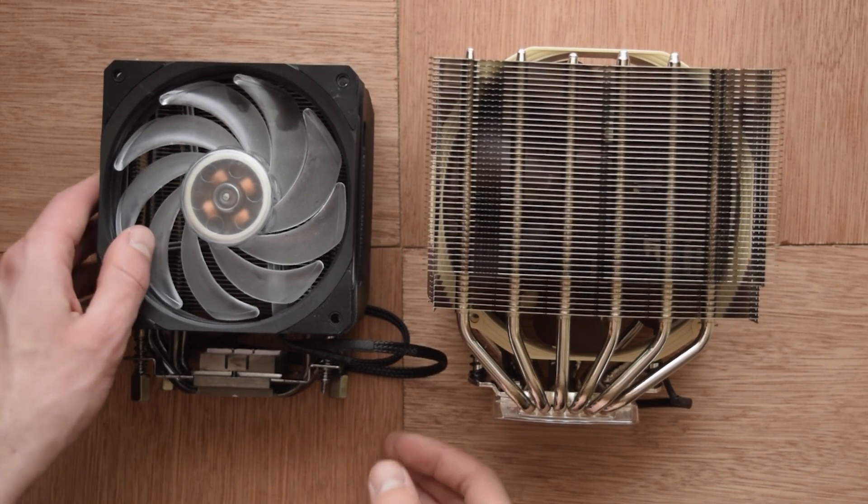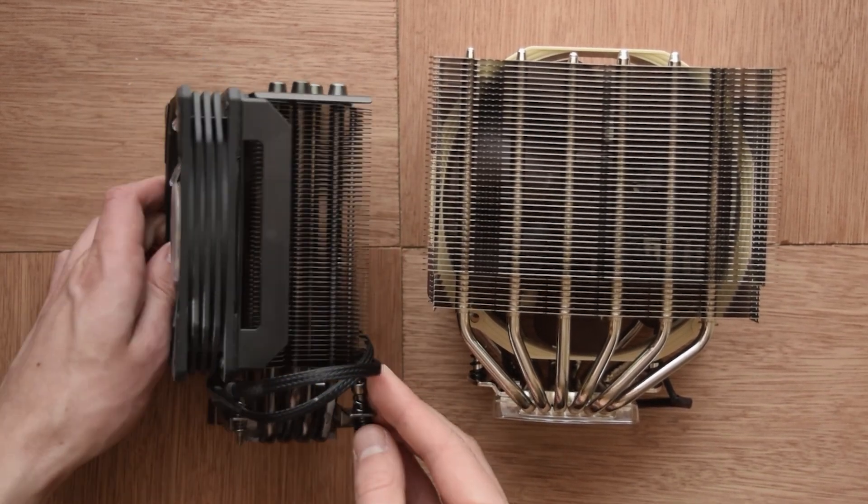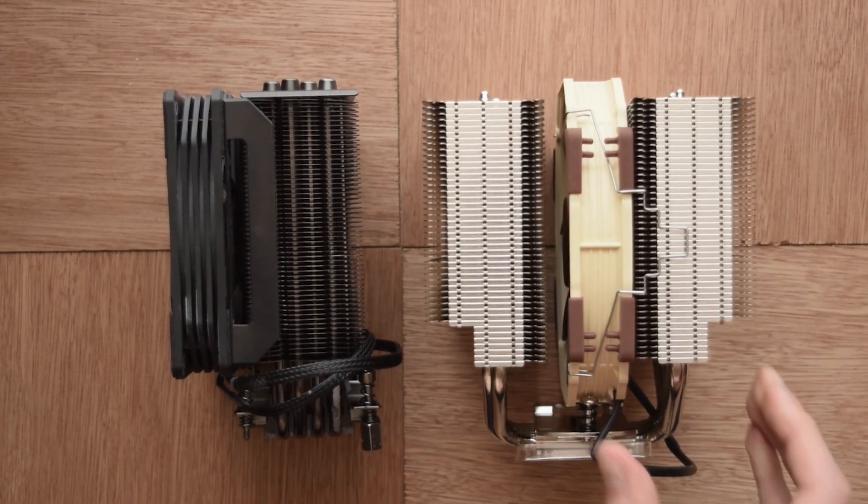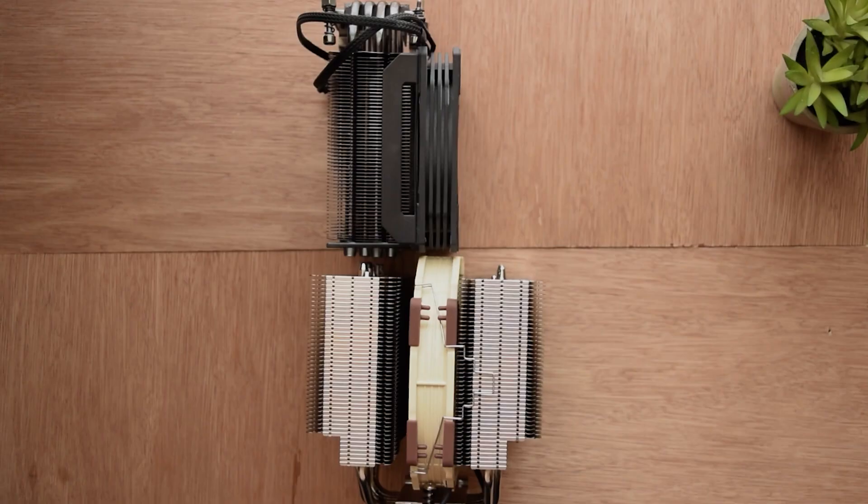Now here's a quick size comparison between the D15S and the Cooler Master Hyper 212 EVO, the RGB black edition. Just looking at sheer size I cannot imagine things are going to look pretty for the EVO in the comparison video.